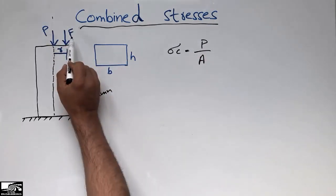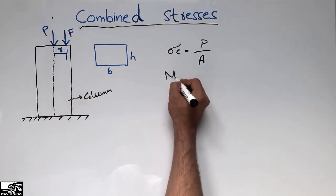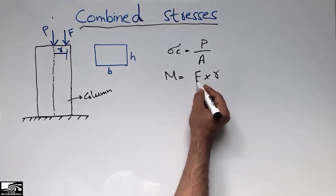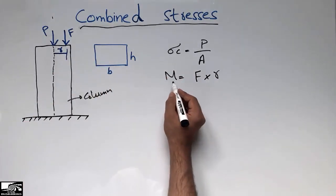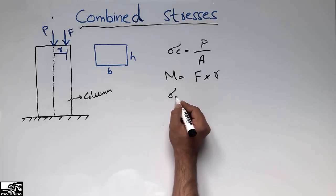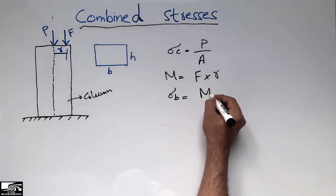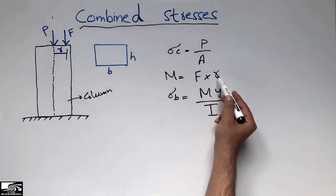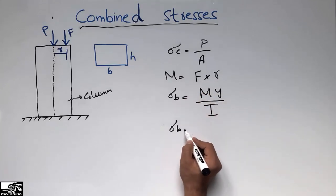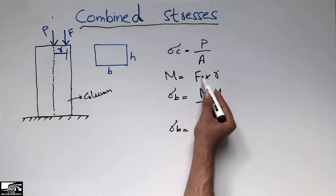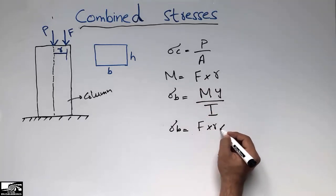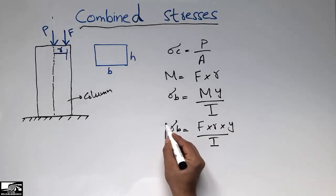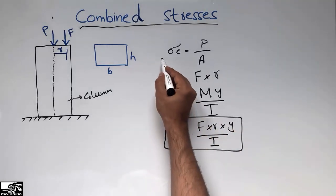The load F creates a moment in the column. The moment M equals F times R, where F is the eccentric load and R is the moment arm. Due to this bending moment, we have bending stresses. The bending stress formula is M times Y over I, where I is the moment of inertia. Substituting M, the bending stress equals F times R times Y divided by I. So we have two stresses: bending stress and compressive stress.